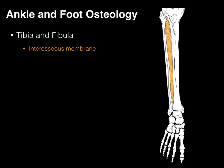Tethering the tibia to the fibula is the interosseous membrane. It is a fibrous syndesmosis joint that keeps the tibia and fibula anchored together by dense, irregular collagenous connective tissue, and it helps provide a great deal of stability to not only the tibia and fibula, but also to the ankle joint.